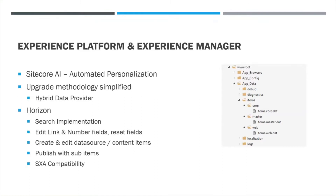Sitecore has announced three basic requirements to leverage the AI for auto personalization. One is you need to be on Sitecore 9.x Plus platform on cloud. You need to define your goals and engagement value scores, and also create your content variation and enable auto personalization. All of this should let marketing professionals drive auto personalization based on the user's journey and select the content variation accordingly. I'm really looking forward to seeing it in action — I haven't had a chance to play around with it yet because I didn't have a cloud instance installed, but it looks really interesting.